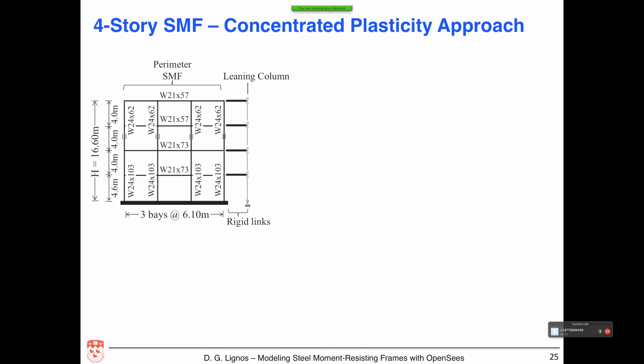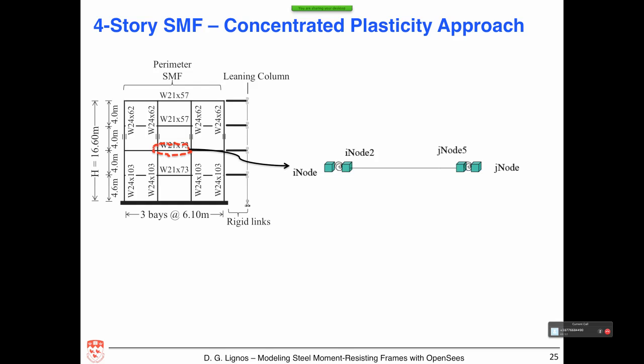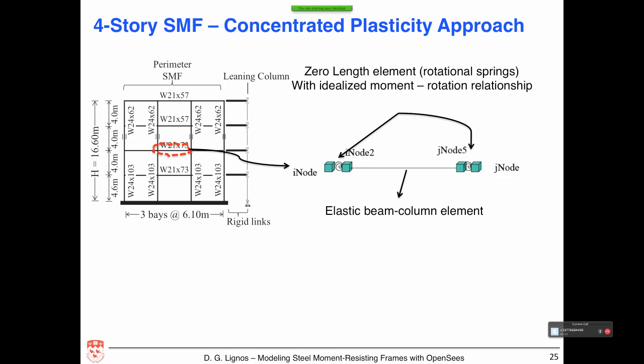Now I model the same structure with a concentrated plasticity approach, still using a leaning column for P-delta. The key difference is that I introduce additional nodes and use zero-length elements to represent the flexural behavior of individual components with an idealized moment-rotation relationship. Between the secondary nodes at each end, an elastic beam-column element is used. This requires knowing the moment-rotation relationship for the element — that's the challenge of this approach.